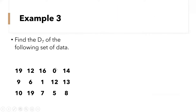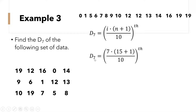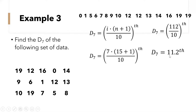Now let's have example number 3: find the decile 7 of the following set of data. Again, do not forget to arrange the data in ascending order. We are looking for decile 7, so our i is 7. So d sub 7 is equal to 7 times 15 (the number of samples) plus 1, over 10. So 15 plus 1 is 16, times 7 is 112, divided by 10 is 11.2.